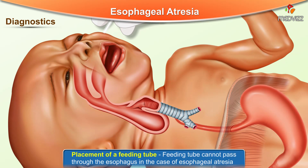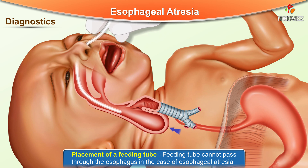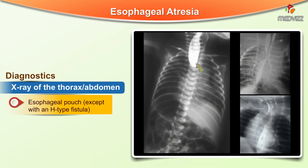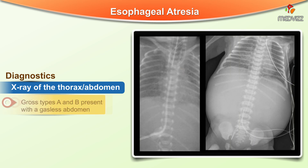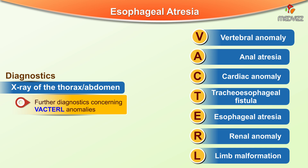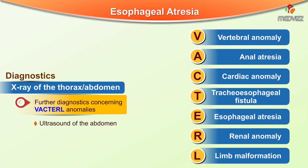Diagnostic modalities include placement of a feeding tube, which cannot pass through the esophagus in cases of esophageal atresia. An X-ray of the thorax or abdomen can show esophageal pouching, except in type E (H-type fistula), whereas gross type A and type B present with a gasless abdomen. Further diagnostics for associated anomalies should be performed using abdominal ultrasound or echocardiography.